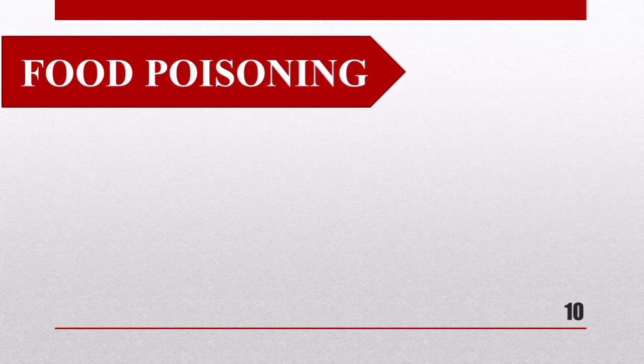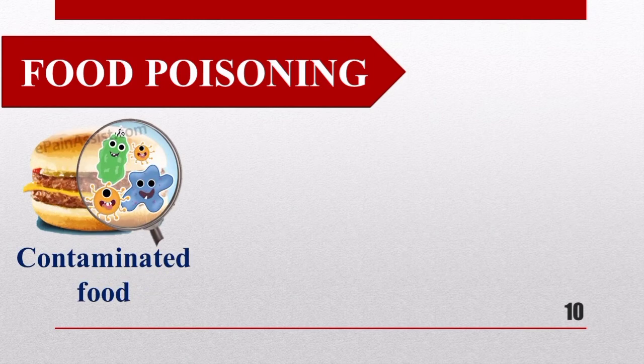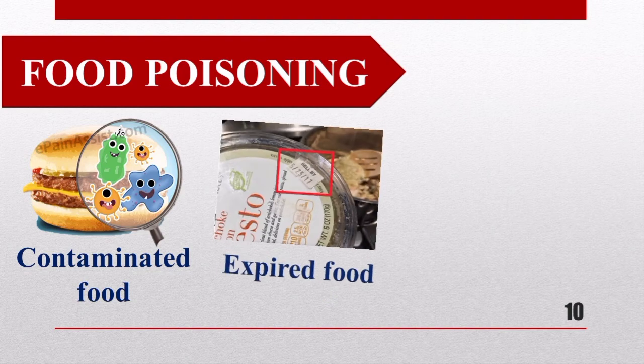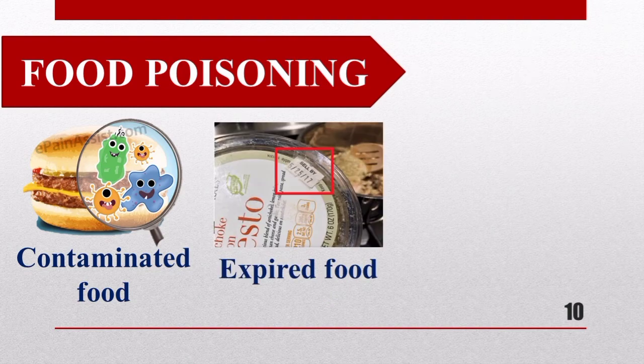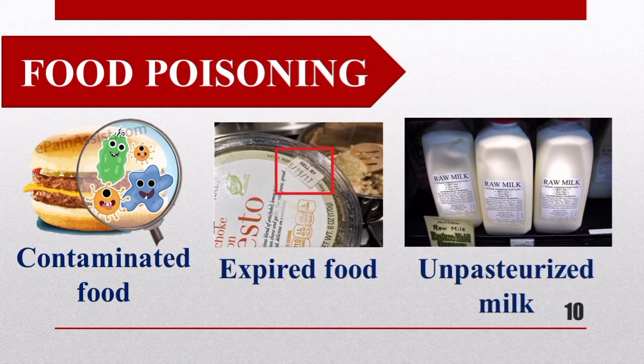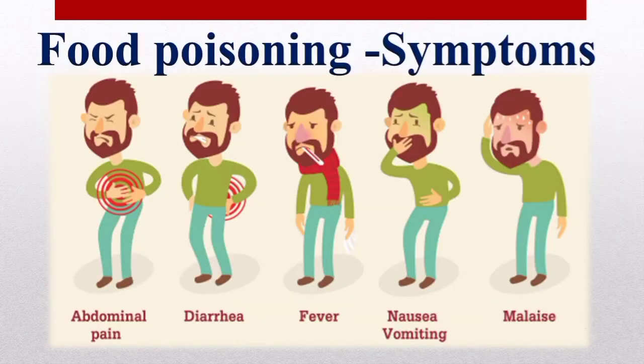Food poisoning is a very common condition. It is usually mild but can be severe and even deadly for some individuals. In most cases, food poisoning occurs when people consume contaminated food, expired food items, adulterated food, or unpasteurized milk and milk products. Almost all forms of food poisoning produce nausea, vomiting, abdominal cramps, and diarrhea.